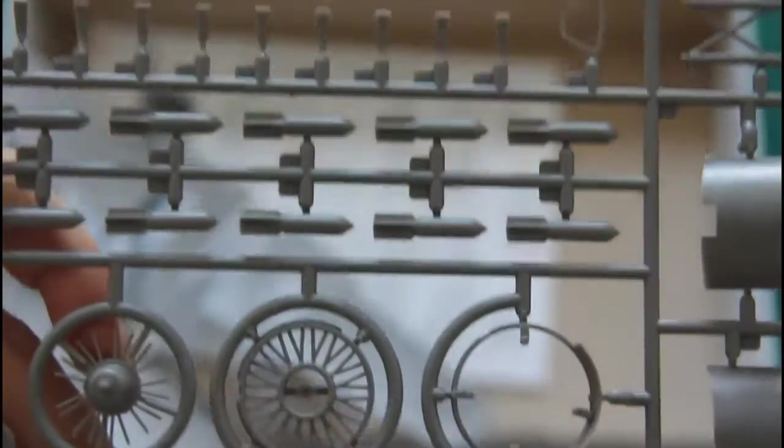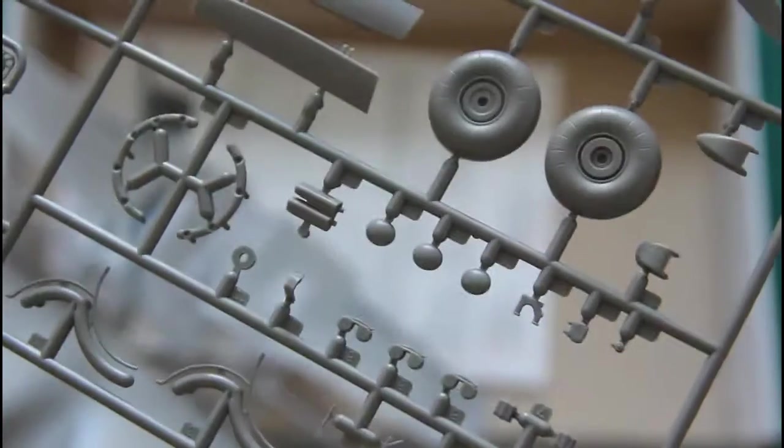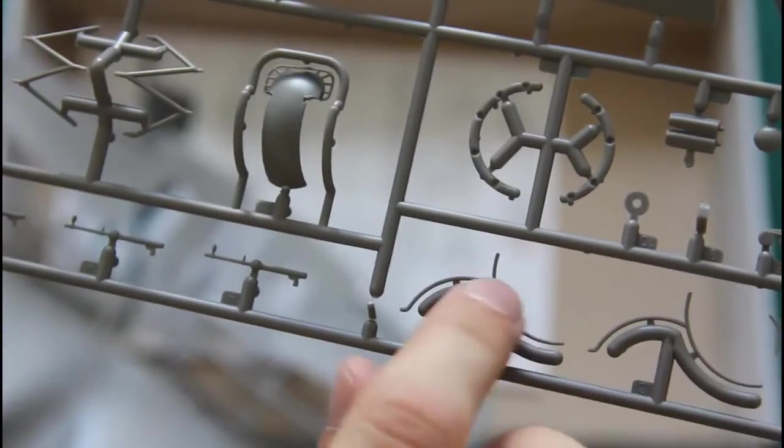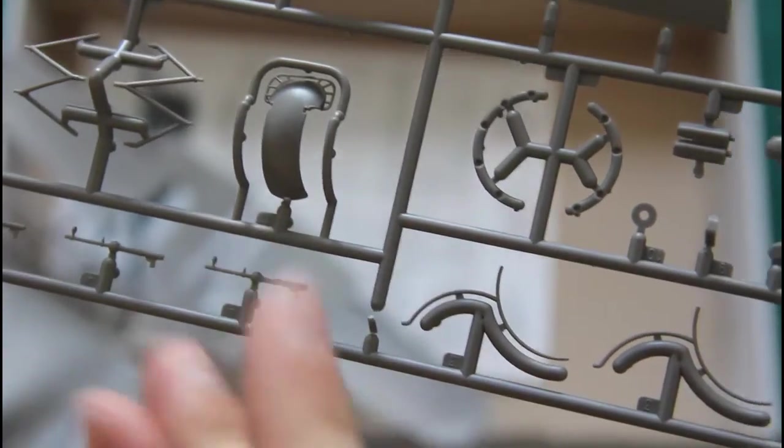Here you can see some of the parts. The bomb load is also included. Some of the landing gear parts are also here. And even the thin elements are carefully replicated. All you have to do is just cut them off without damaging them.